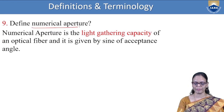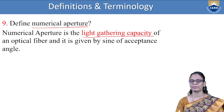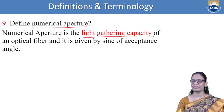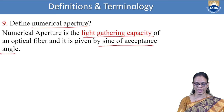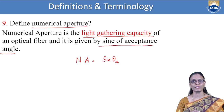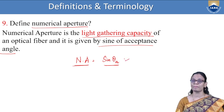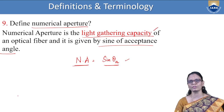Define numerical aperture. Numerical aperture is the light-gathering capacity of the optical fiber, and it is given by the sine of the acceptance angle: NA = sin(acceptance angle). Numerical aperture depends upon the acceptance angle and gives us a measure of the light-gathering capacity of the optical fiber.